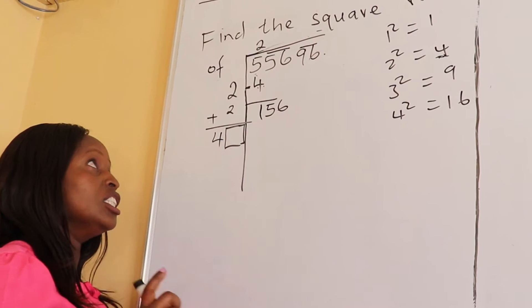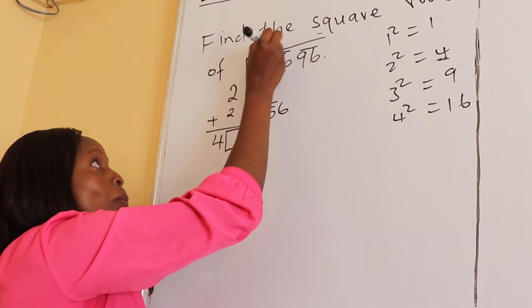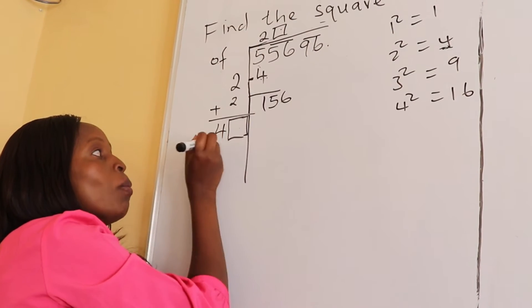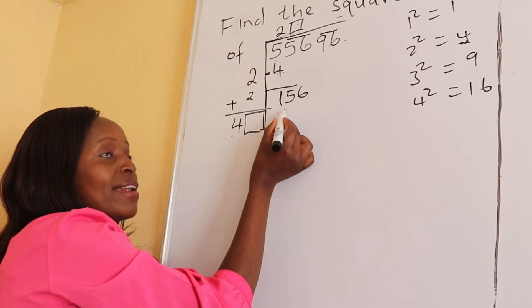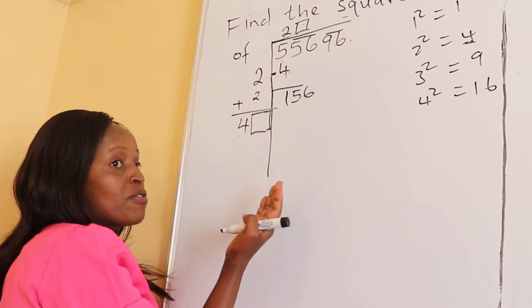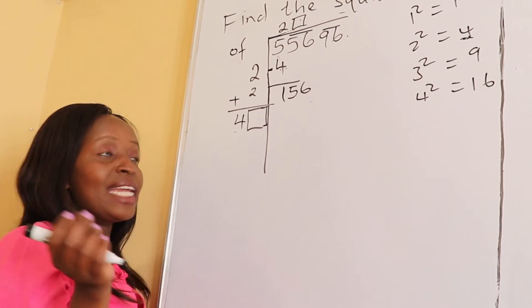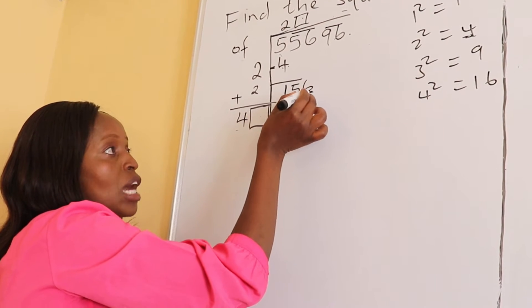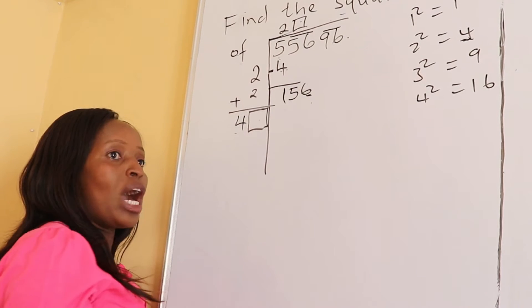Now we are going to use trial and error method. You look for a digit that when you put it here and also here, the same digit, when you multiply gives you a number exactly as 156 or a number near 156.